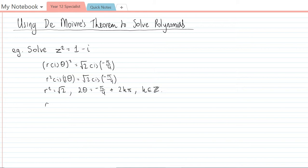So we get r equal to the fourth root of 2 which could be expressed as 2 to the power of 1 quarter. That's really up to you. And then theta is equal to negative pi on 8 plus k pi.